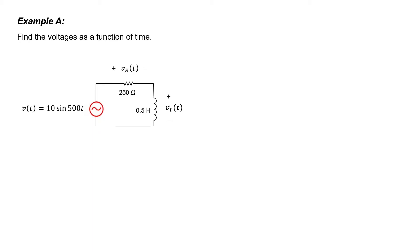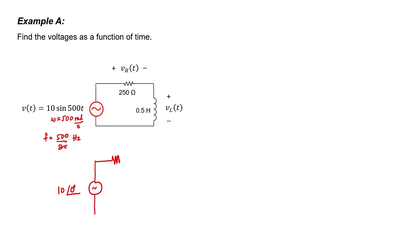In example A, we're tasked with finding the voltages across the resistor and an inductor as a function of time. The source is sinusoidal, and the angular frequency omega is 500 radians per second, corresponding to a frequency in hertz of 500 divided by 2 pi. Let's redraw this circuit using phasor notation. The voltage at the source is 10 sine(omega t + 0°), so the amplitude is 10 and the phase angle is zero. The impedance of a resistor is just the resistance, and the impedance of an inductor is j*omega*L. Since omega is 500 and L is 0.5, the impedance is j250 ohms.